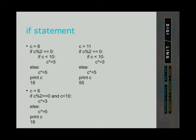We can also have an if statement within an if statement. For example, we are checking if the number is divisible by 2. If this is true, we then check if the number is smaller than 10. If this is also true, the number is multiplied by 3 and the value assigned to the same variable. Otherwise, if the number is not divisible by 2, the number is multiplied by 5 and the value assigned to the same variable. In the bottom example we are checking the same thing using the logical operator AND.